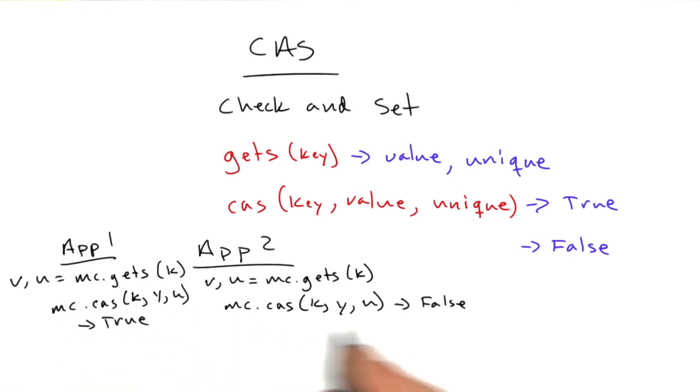What both these app servers would really do is the code would look something like this. r equals, and then like while r equals false, then you have like u v equals mc.gets, r equals mc.cas, k, y, u.